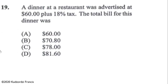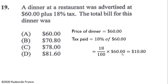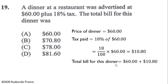Let's go to Question 19. A dinner at a restaurant was advertised at $60 plus 18% tax. The total bill includes $60 plus 18% of $60 = (18/100) × 60 = $10.80. So the total bill = $60 + $10.80 = $70.80. Therefore the correct answer is B.